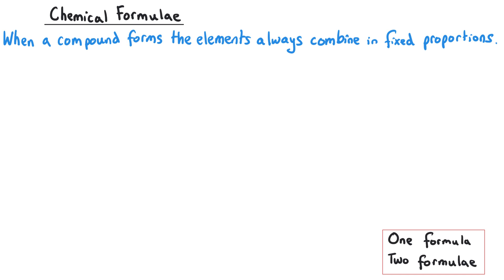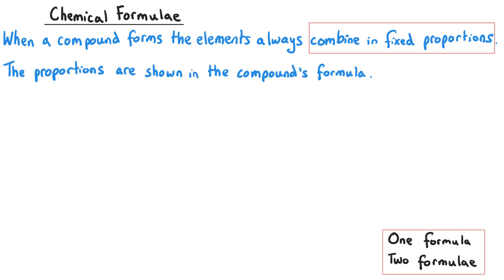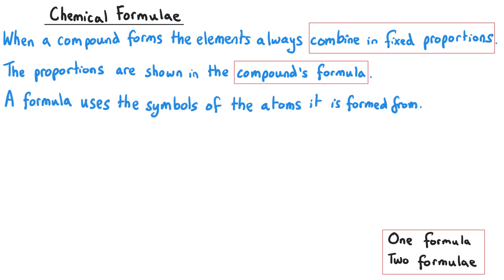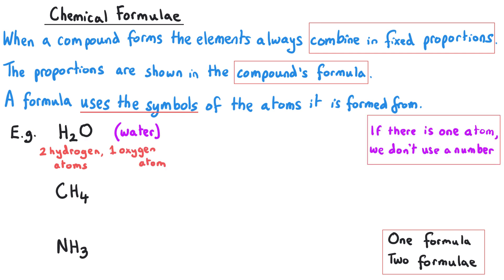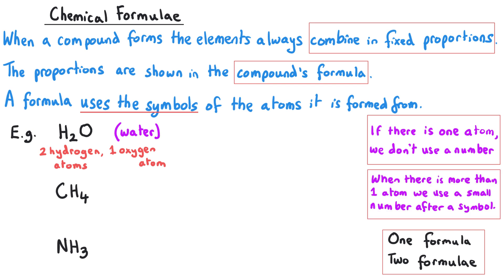When a compound is formed, the elements always combine in fixed proportions, and this proportion is shown in the compound's formula. A formula uses the symbols from the periodic table. We have H2O, which you'll probably recognise as the formula for water — that tells us there are two hydrogen atoms for every atom of oxygen. When there is only one atom of a particular element we don't write the number one; we just assume it's there. For instance, methane has the formula CH4: no number after C means one atom of carbon, and the four after H means four atoms of hydrogen.